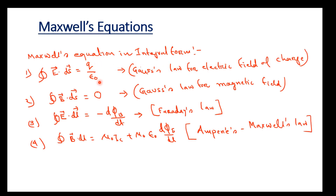Maxwell's equation is a combination of 4 equations. The first one is the integral ∮E·ds = Q/ε₀. This is the Gauss law for electrostatics.